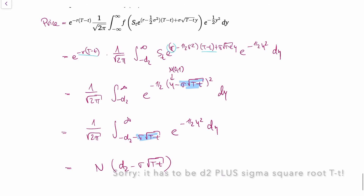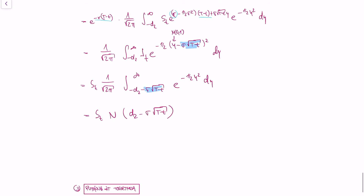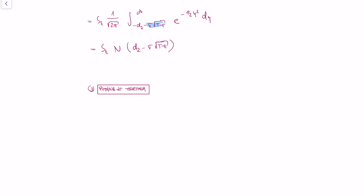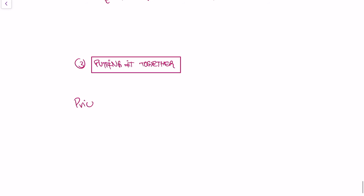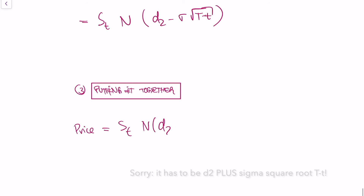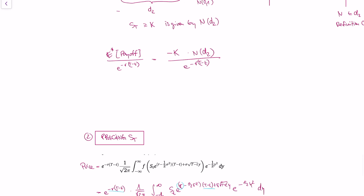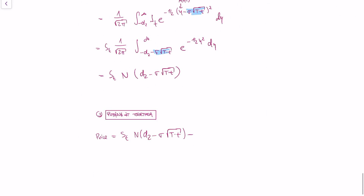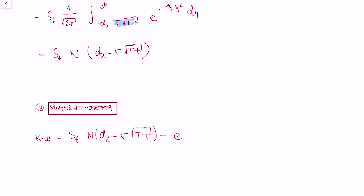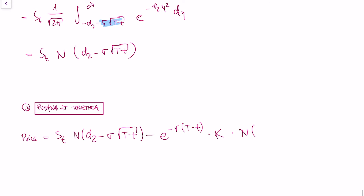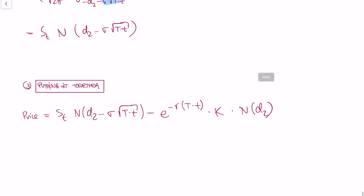I also left out the St — I need the value of the asset today in the formula. So putting it all together: the price of our call option is given by St · N(d2 − σ√(T−t)) minus the value of k we pay, which is e to the power of minus r(T−t) times k times the cumulative normal distribution function evaluated at d2. That's the price of the call option in the Black-Scholes model.